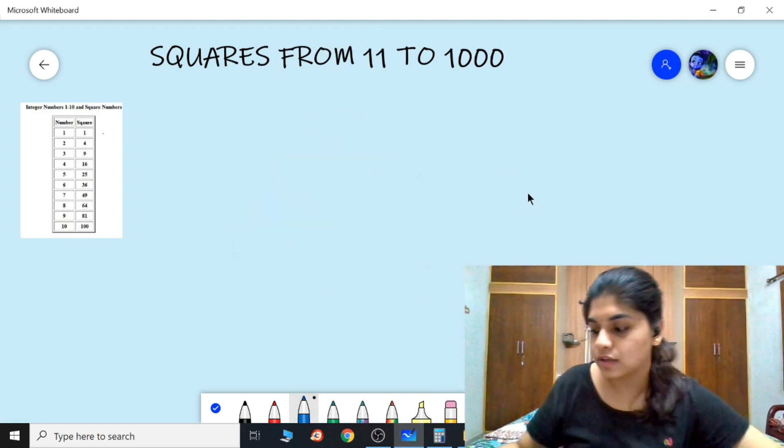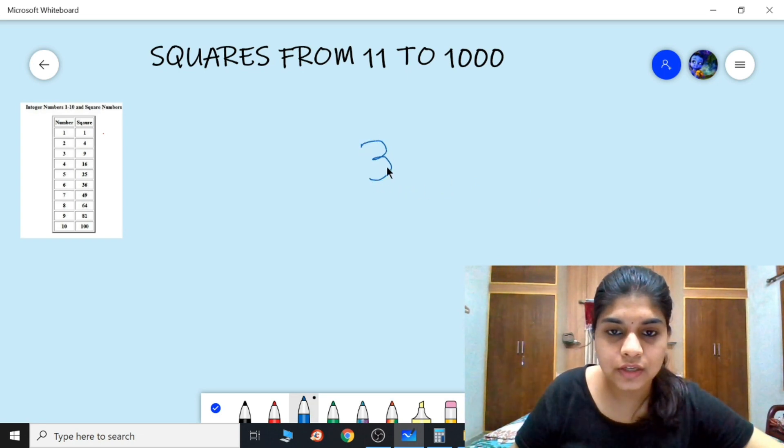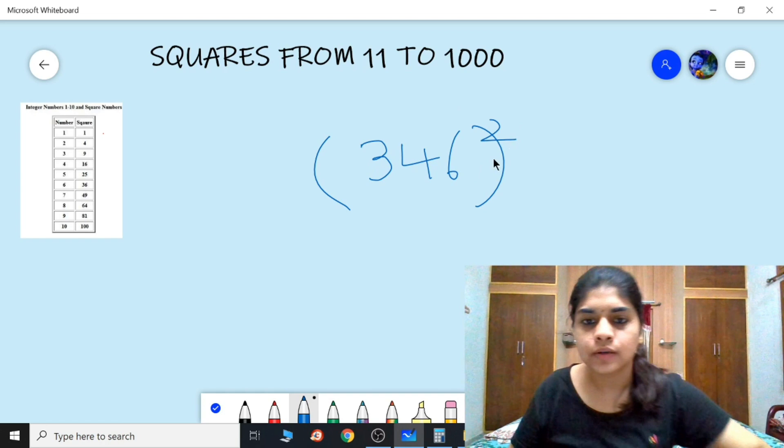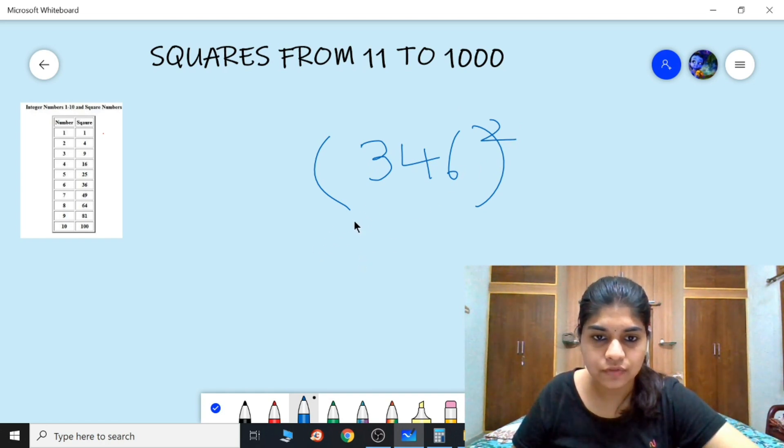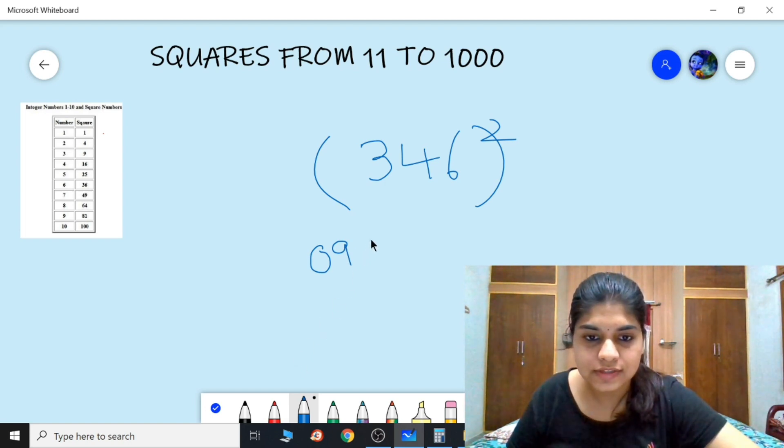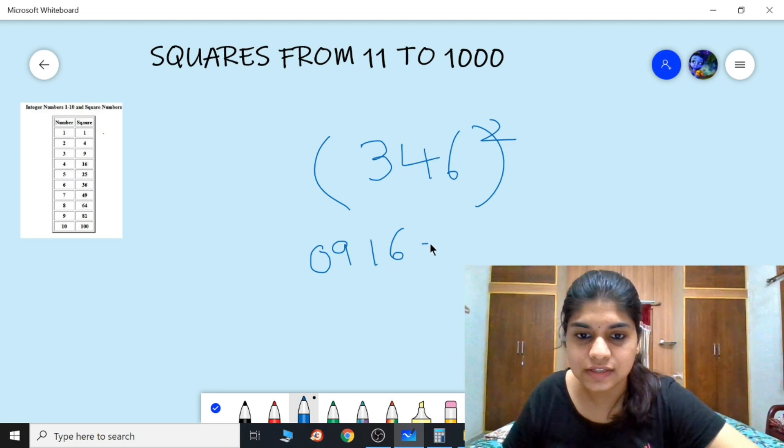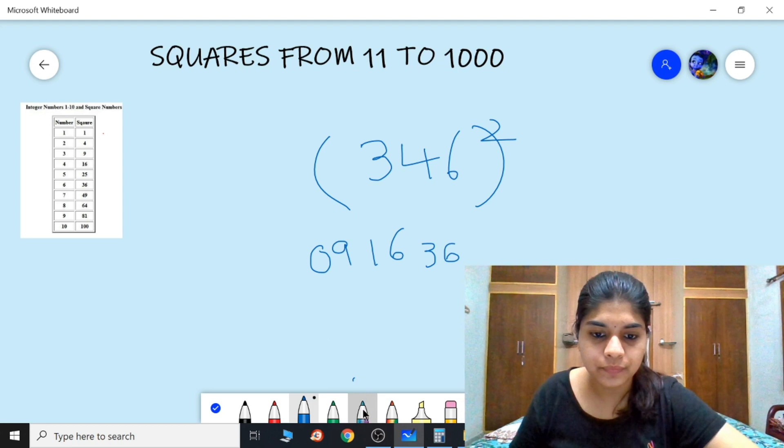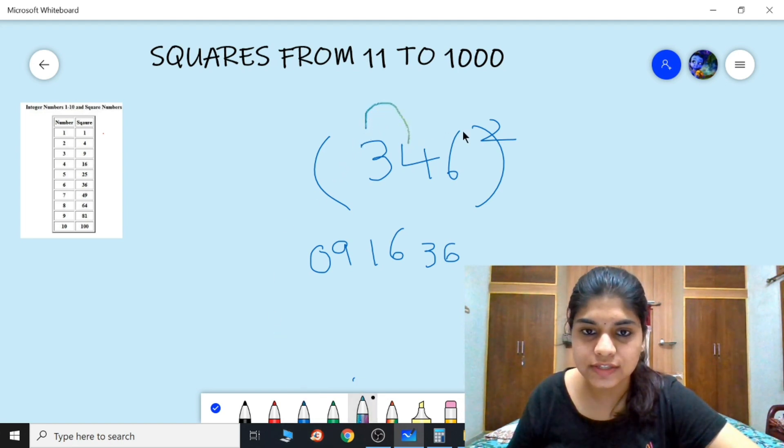I'm taking 346. So to find the square of this one, what we need to do is: square of 3 is 09, square of 4 is 16, square of 6 is 36.